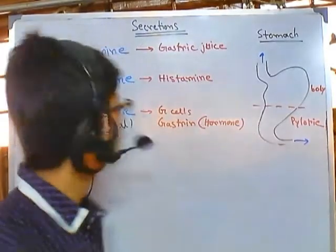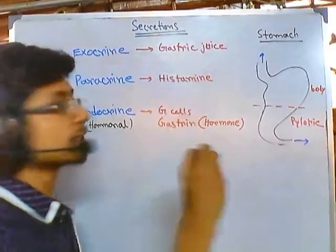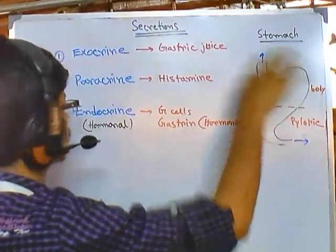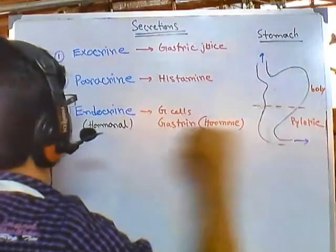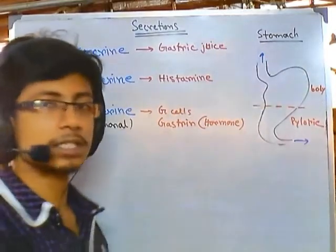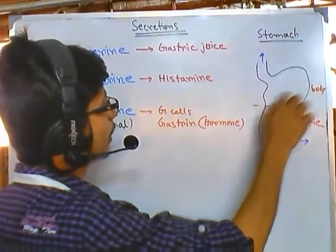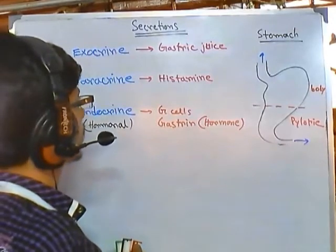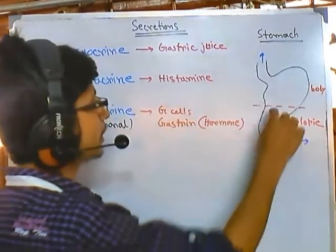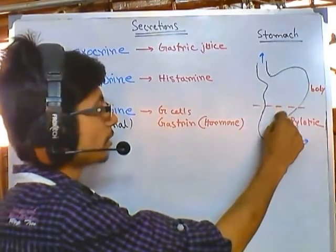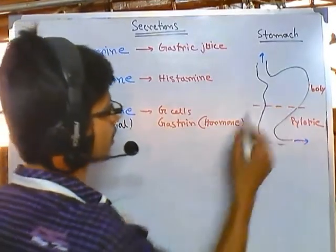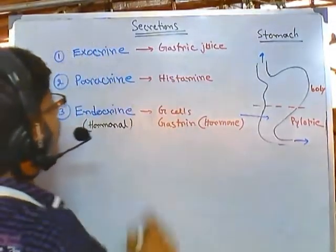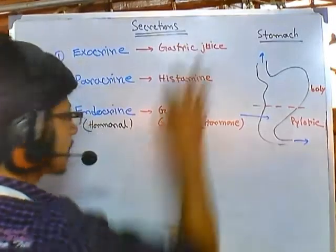The exocrine gastric juice is secreted all over the stomach — both the body and the pyloric region. Histamine secretion also occurs throughout the region. The endocrine signaling — gastrin secretion — occurs especially in the pyloric region. So gastrin is specific to the pyloric section, while the rest of the secretions come from all regions.